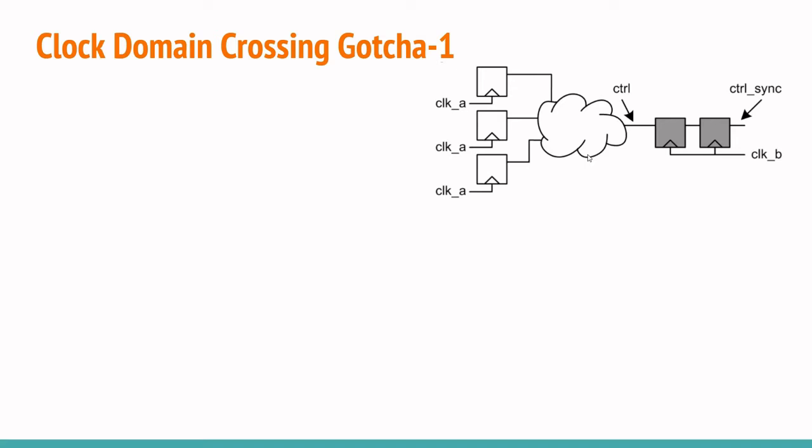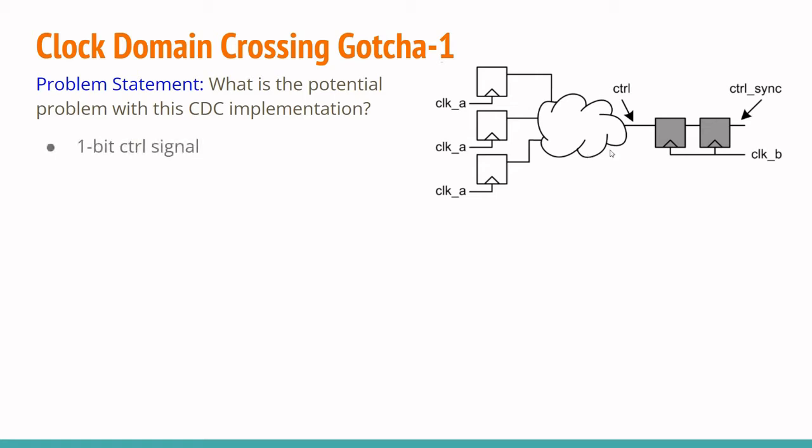It seems everything is as it's supposed to be, right? Well, we'll see. The problem statement here is: what is the potential problem with this CDC implementation? We have a one-bit control signal, we have a double flop synchronizer as we've been taught to implement for passing a signal from one clock domain to another. So then, what exactly is the problem here?